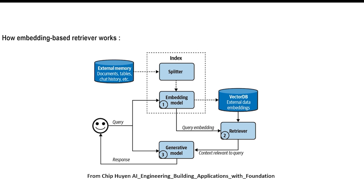The retriever fetches the best matching text chunks and sends them to the next step. At this point, the system has found context-relevant documents based on the user's query. The retrieved documents are then passed to the generative model, like GPT-4 or another LLM, and the model uses the retrieved context to generate a highly accurate and relevant response instead of guessing from its own training data. Finally, the response is returned to the user, completing the retrieval augmented generation process.